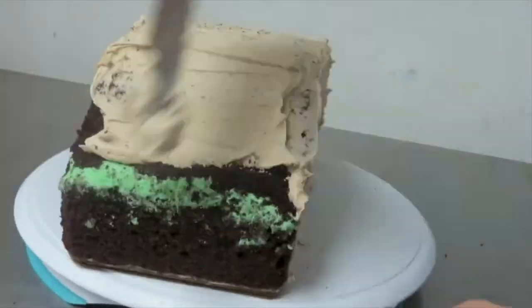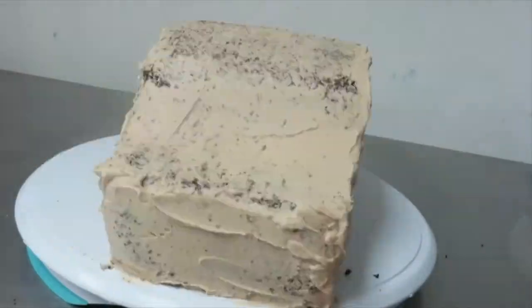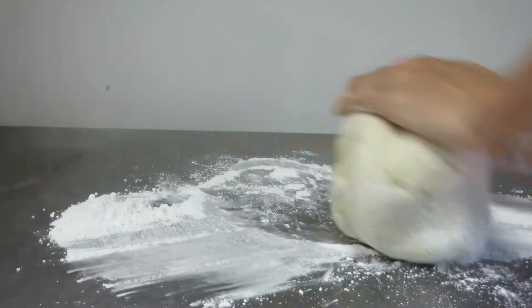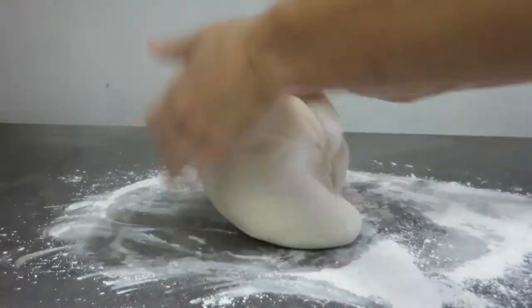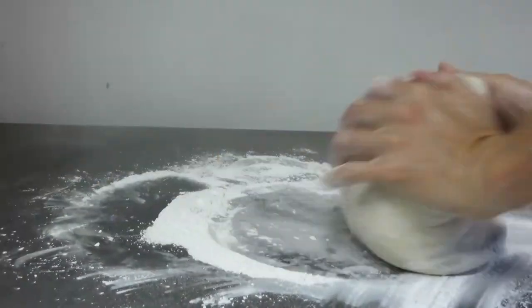Now it's nice and firm so I can frost it without pieces of cake coming off on my spatula. I'm using four pounds of fondant, or about 1.75 kilos, and I'm kneading it to make it soft and pliable.